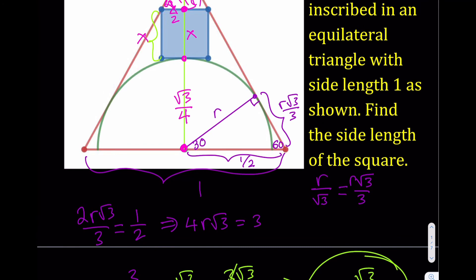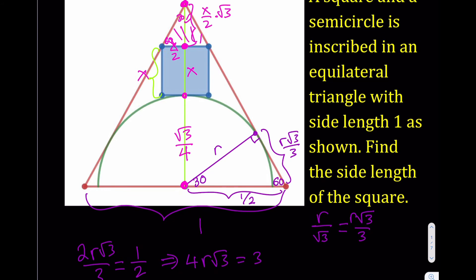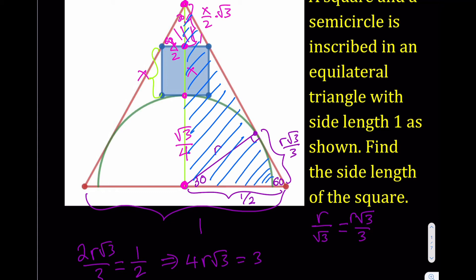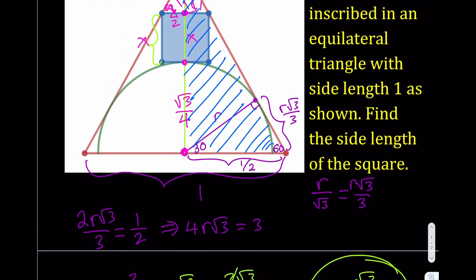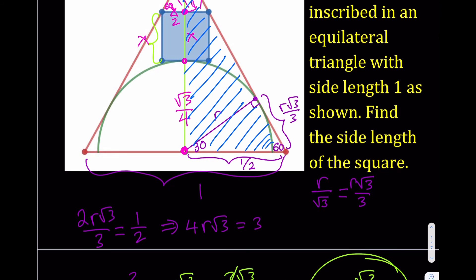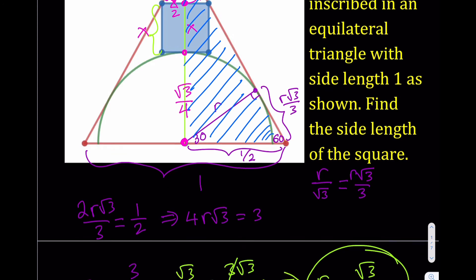We can take advantage of 30-60-90 triangles here. If you consider this half of the giant equilateral triangle as a 30-60-90 triangle, you know the base, which is also the shorter leg. This is 30 degrees, and this is also 30 degrees. So if I know the shorter leg, I can find the longer leg, which is the height. Multiply one half by root three, so that's going to give you square root of three over two. Shorter leg times square root of three equals longer leg.